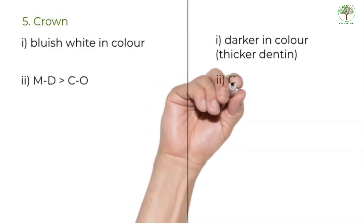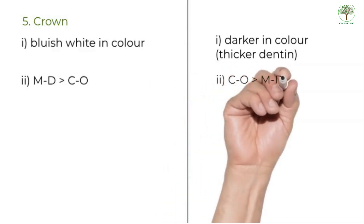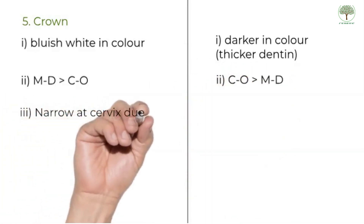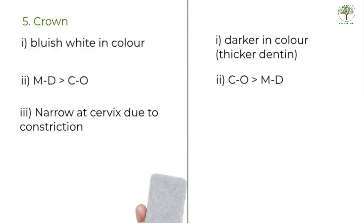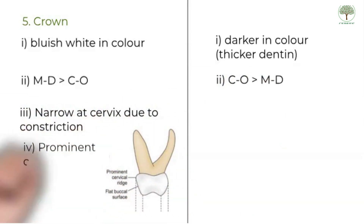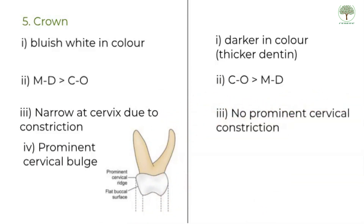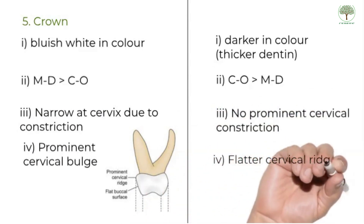Whereas for the permanent anterior teeth, the cervical occlusal dimension is much greater than the mesiodistal width. A marked cervical constriction is seen in the primary teeth, with a very prominent cervical bulge or a cervical ridge. This is most prominent in the primary mandibular first molar.